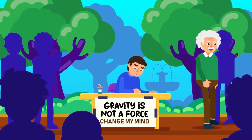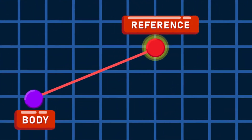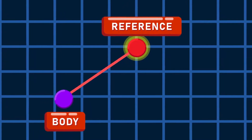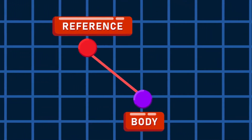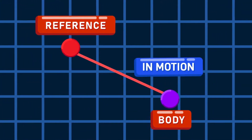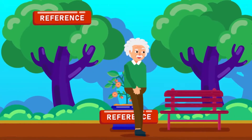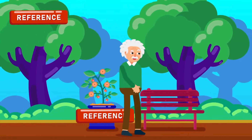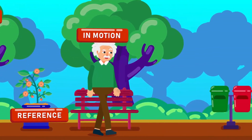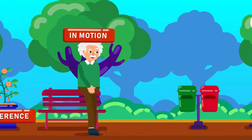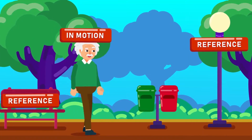What is motion? If a body continuously changes its position with respect to a reference frame, then it is said to be in a state of motion. For example, if you are walking in an empty park, you are in a state of motion with respect to the trees, benches, and light poles around you.